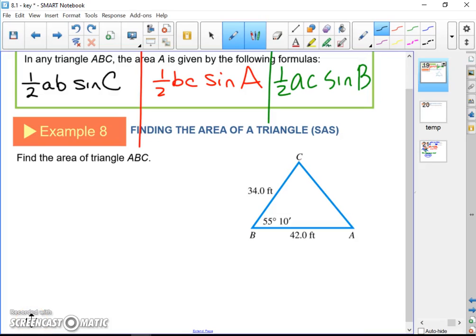Example 8, we're going to find the area of triangle ABC. And you should notice in this triangle down here, we've got side and other side.